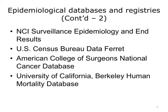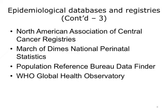Here is a set of data sources provided by different types of organizations: the National Cancer Institute, the U.S. Census Bureau, the American College of Surgeons, and the University of California in Berkeley all maintain their own epidemiological databases. There are many more epidemiological databases and registries available online. You should be familiar with how the information in these epidemiological databases and registries is updated and exchanged with clinical health institutions.